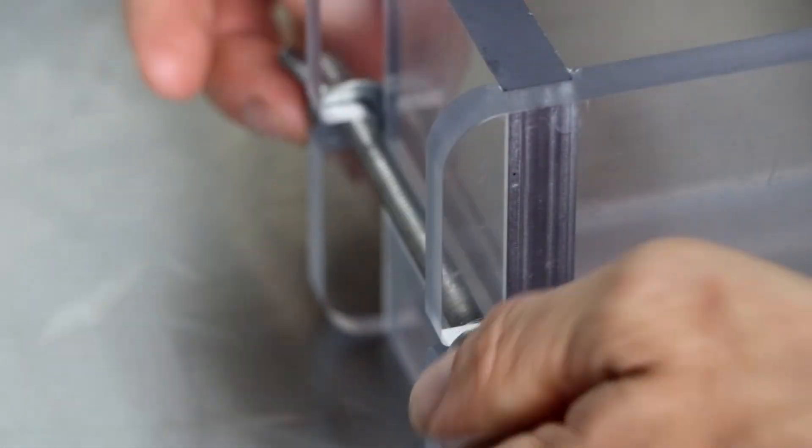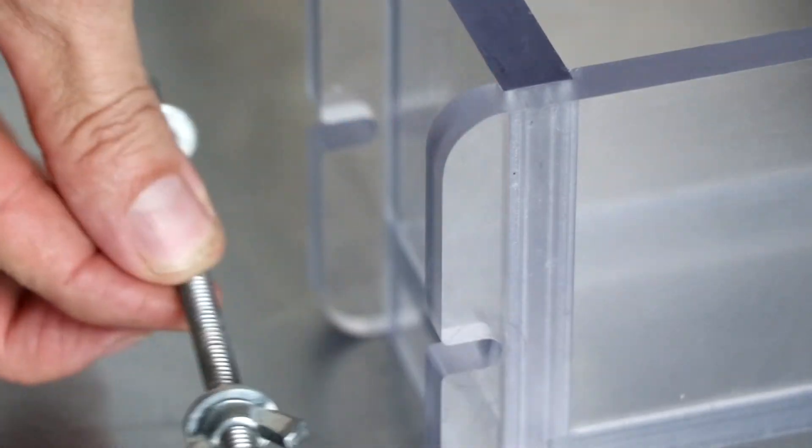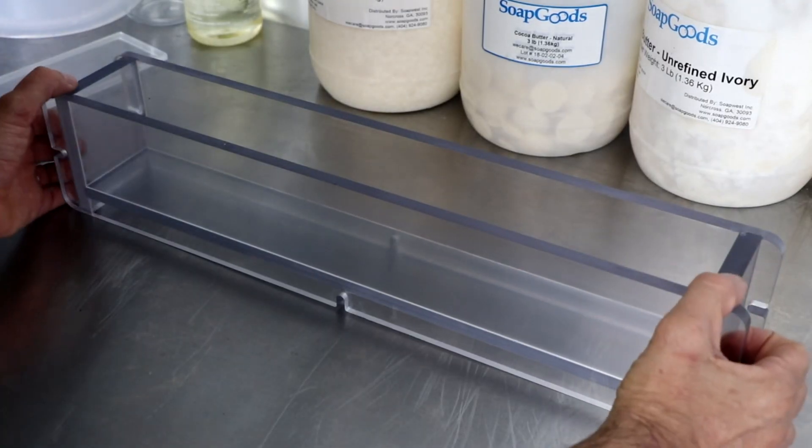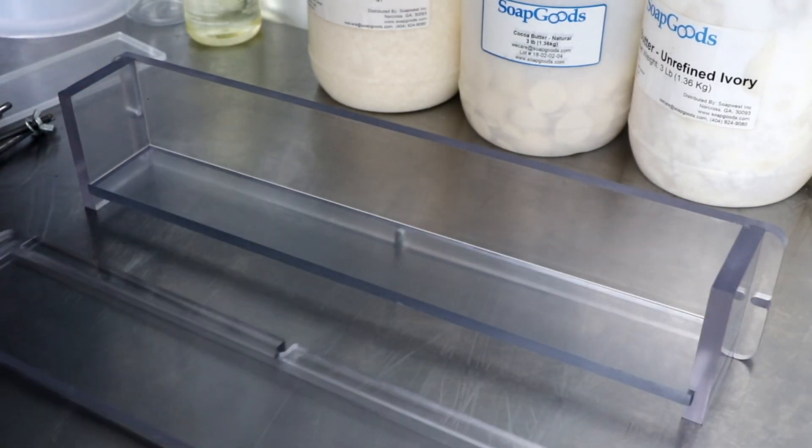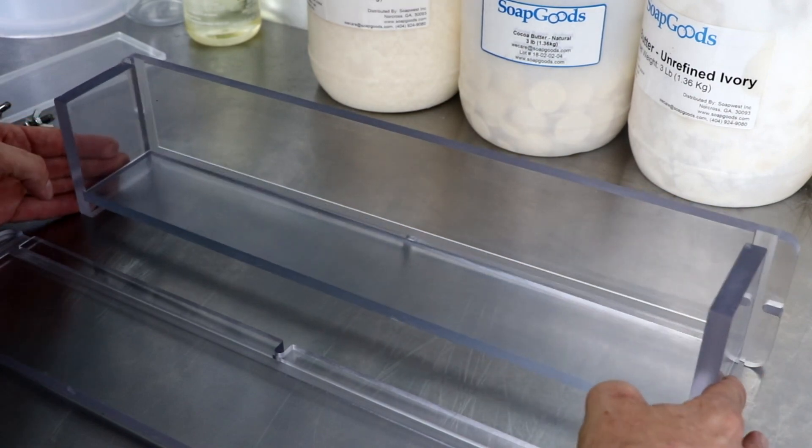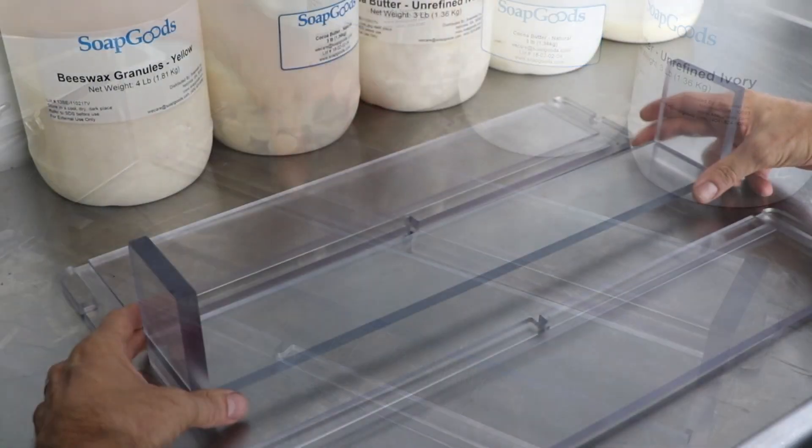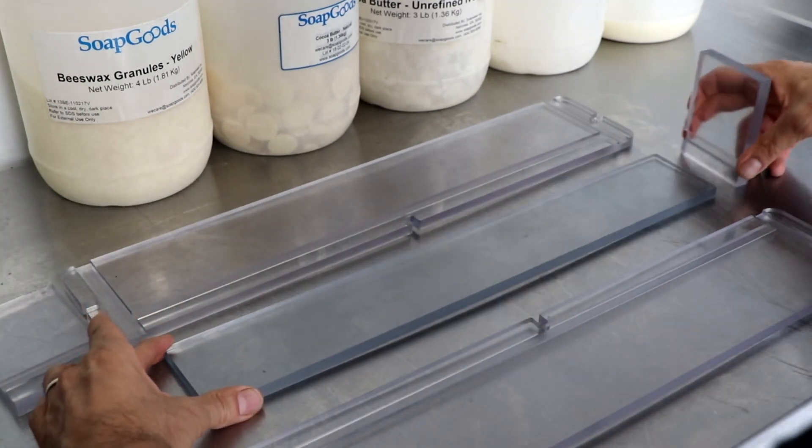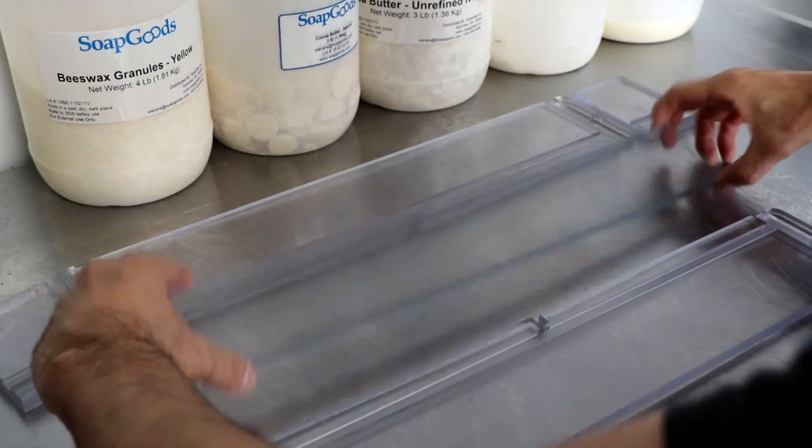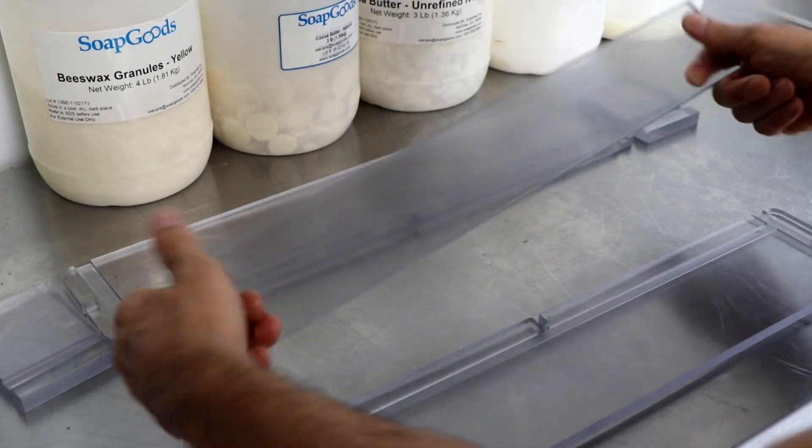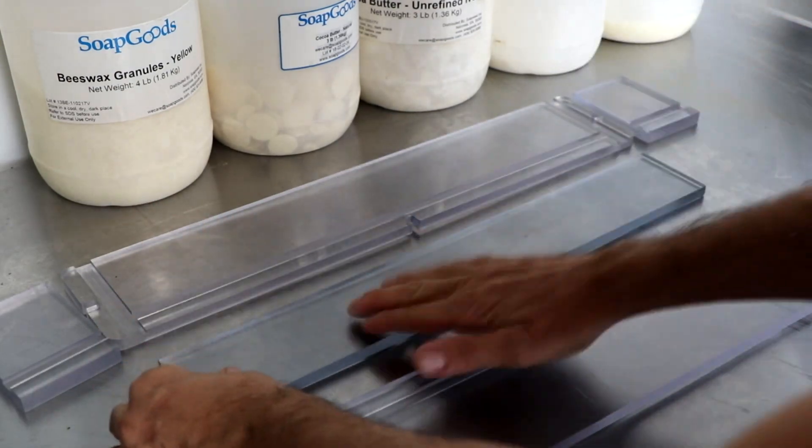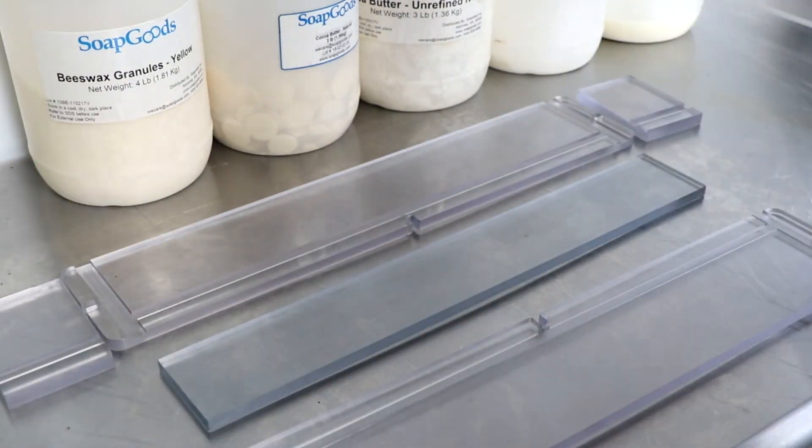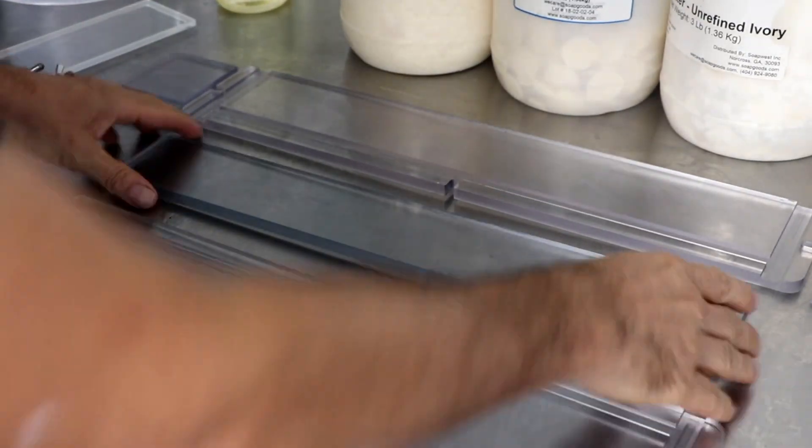All I'm doing now is I'm loosening three thumb screws, removing those little bits, and let me show you how easy it is to take this particular mold apart. Now what we normally do is right before we unmold, we'll pop it in the freezer for about 45 minutes or an hour, and this soap just literally pops right off.